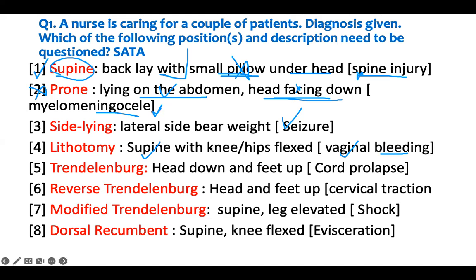Trendelenburg position - the head is down, your feet go up. You can use that for cord prolapse - a patient who has cord prolapse. So that is correct; I don't need to intervene. This is an example of what you can use it for.